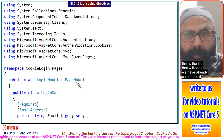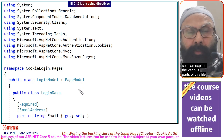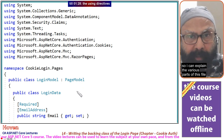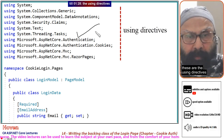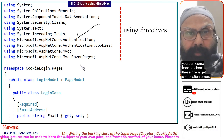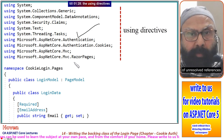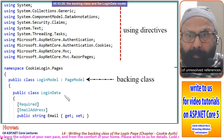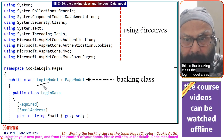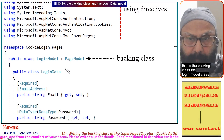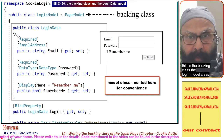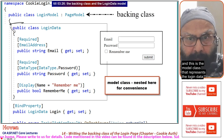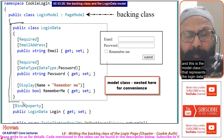This is the file that will open. We have already completed it, so I can explain the various parts. These are the using directives — you can come back to check these if you get compilation errors of unresolved references. This is the backing class: the LoginModel class. And this is the model class that represents the login data.